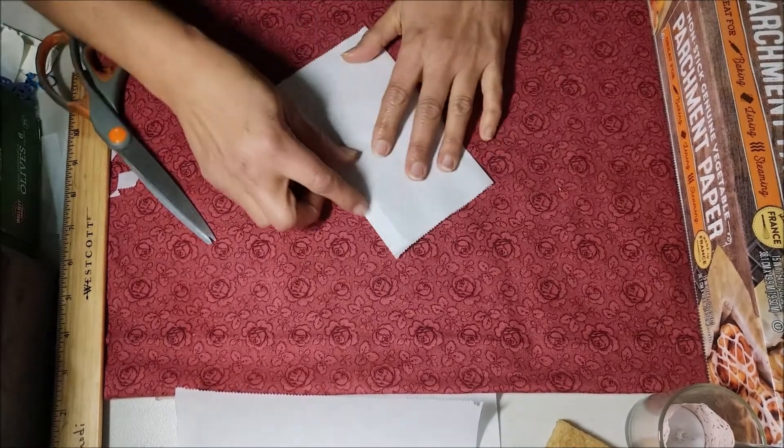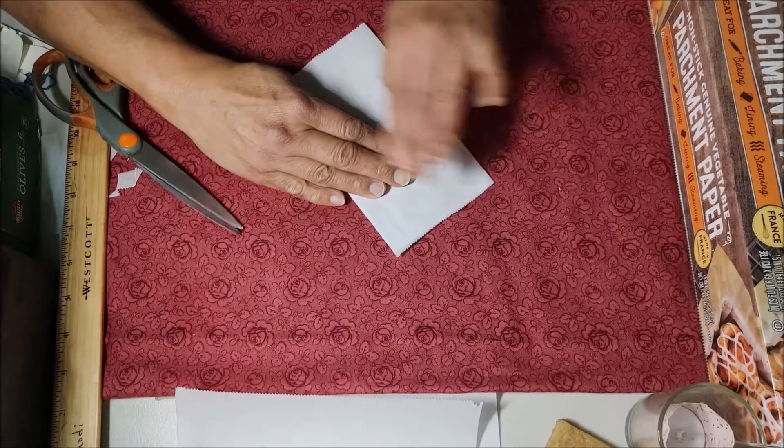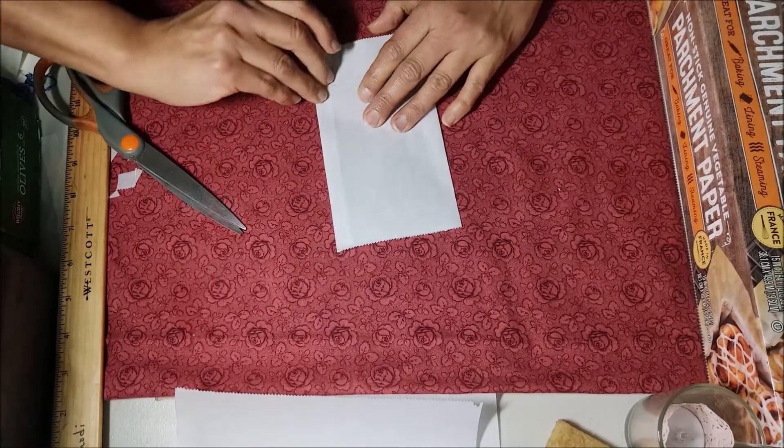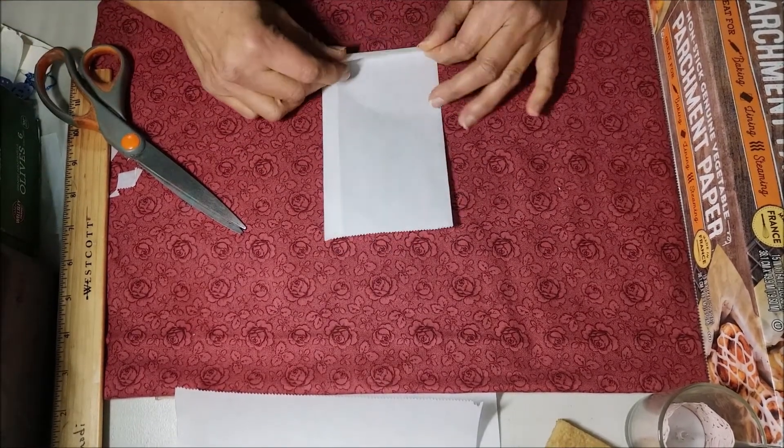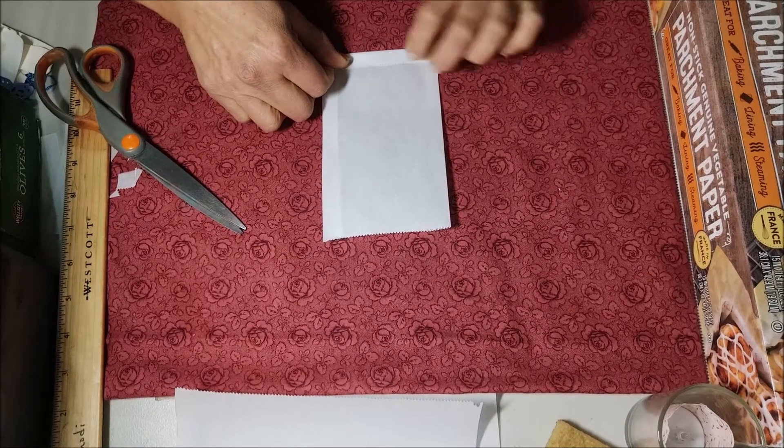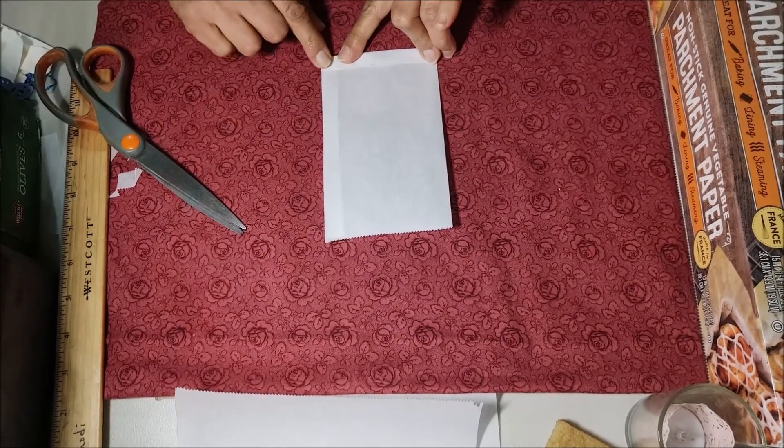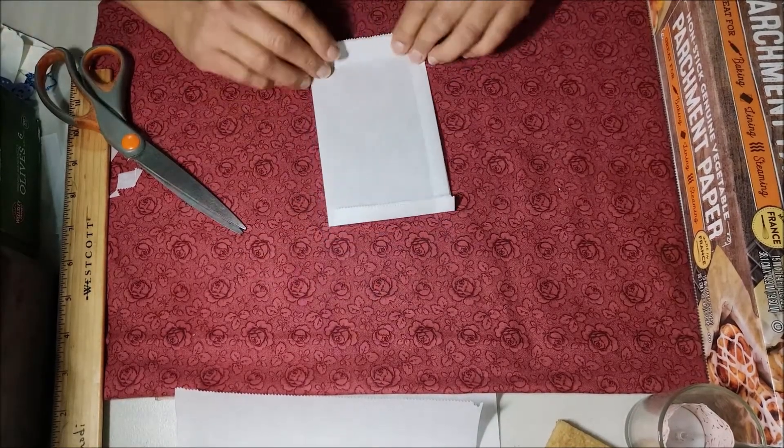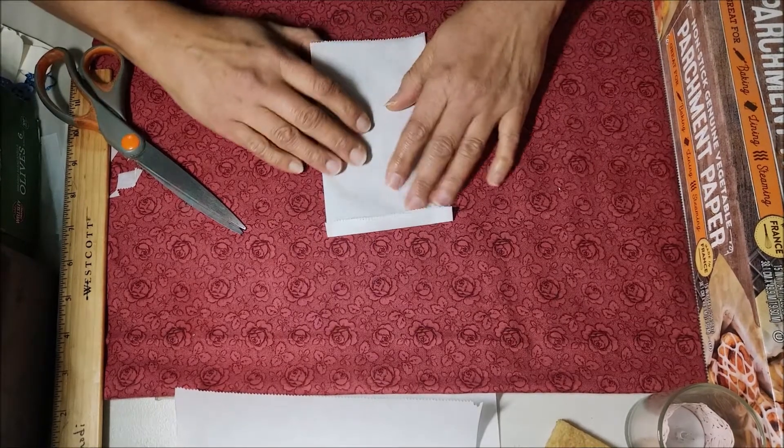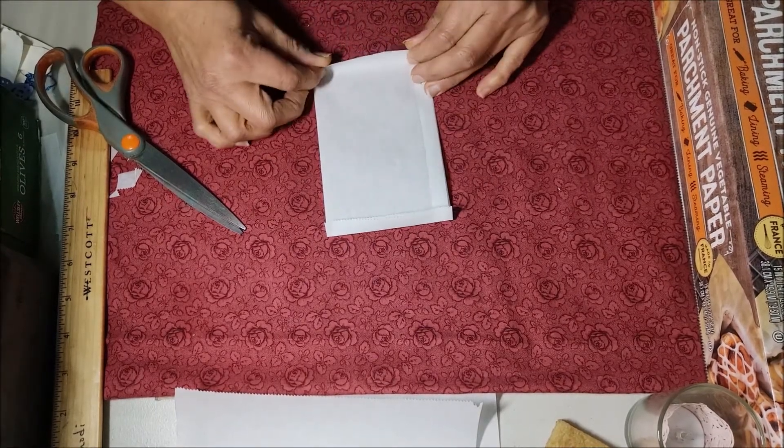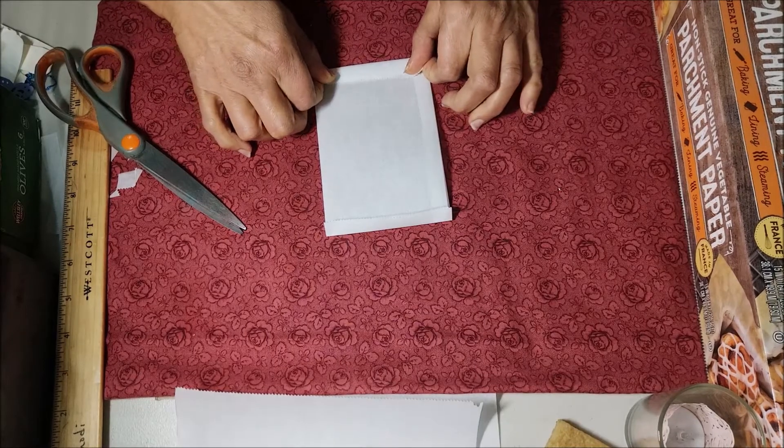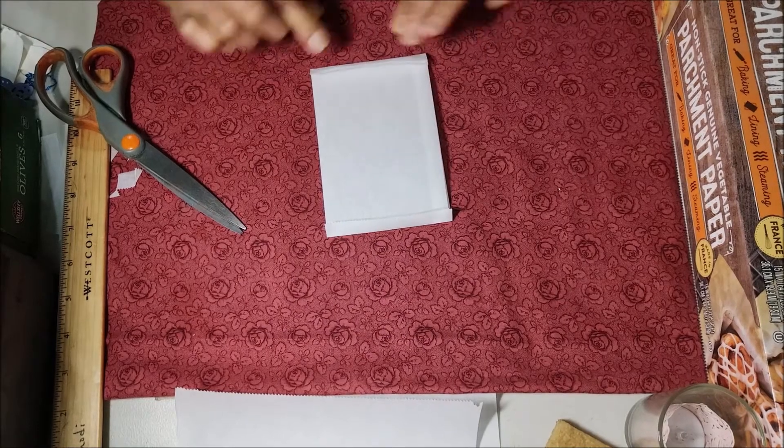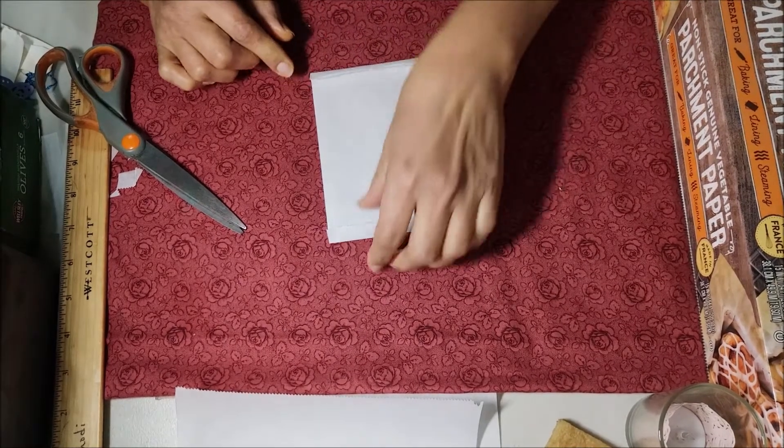Now once the envelope is folded, we are going to fold from the bottom part approximately half an inch. It is important that the two edges are even, and we are going to do the same on the top part. It can be a little more, a little less, there is no exact measurement, you don't have to measure it exactly, but it is only an idea of how to work.